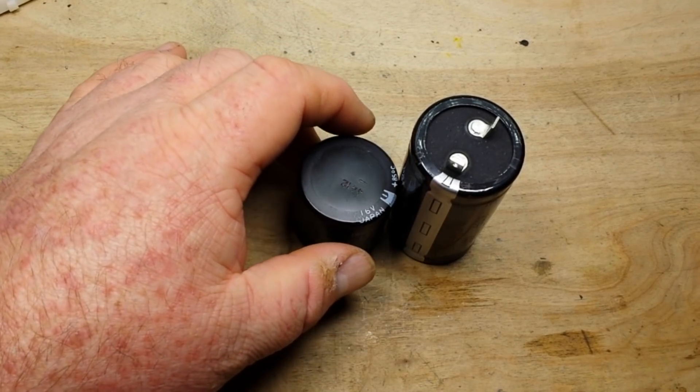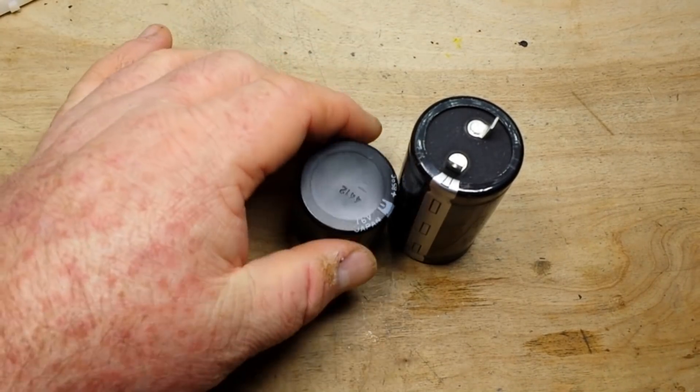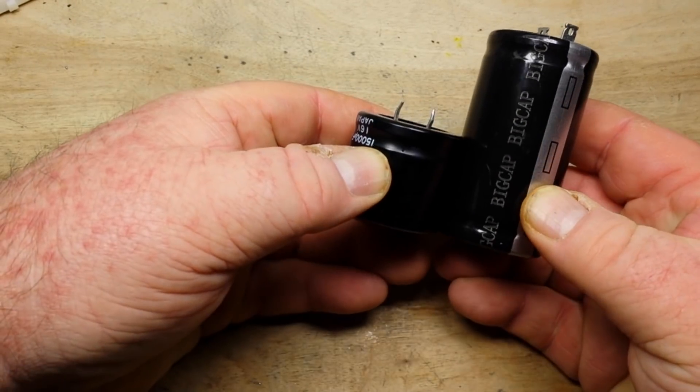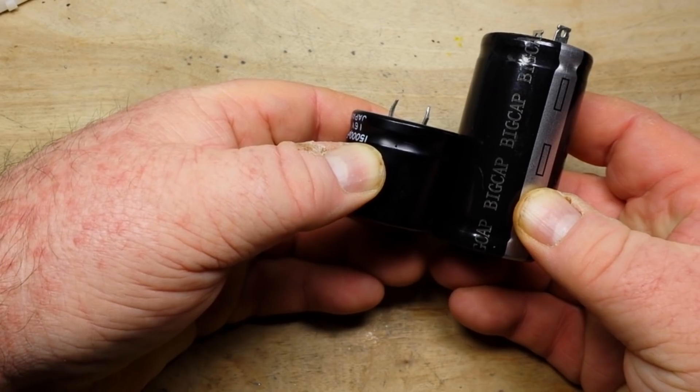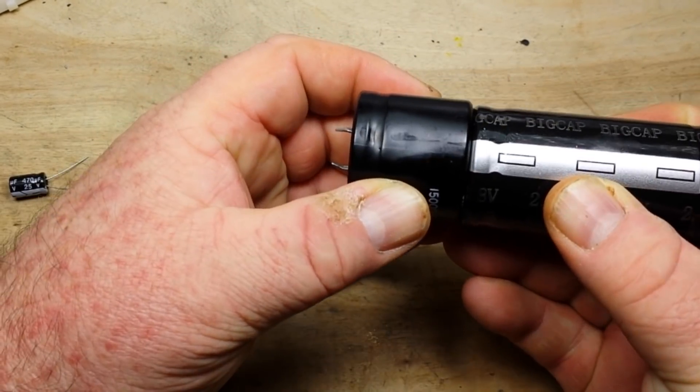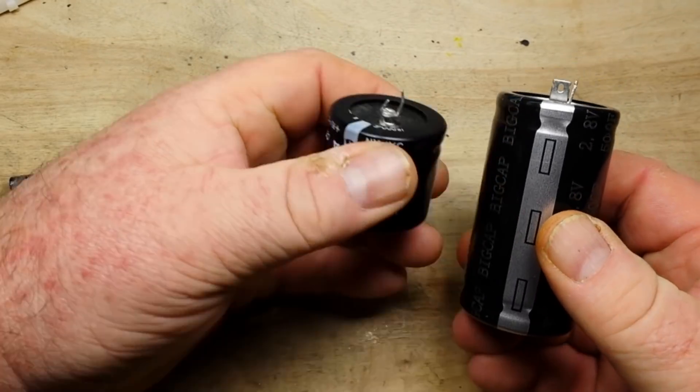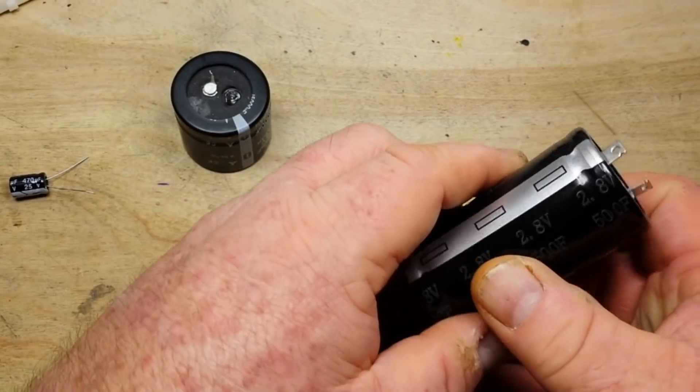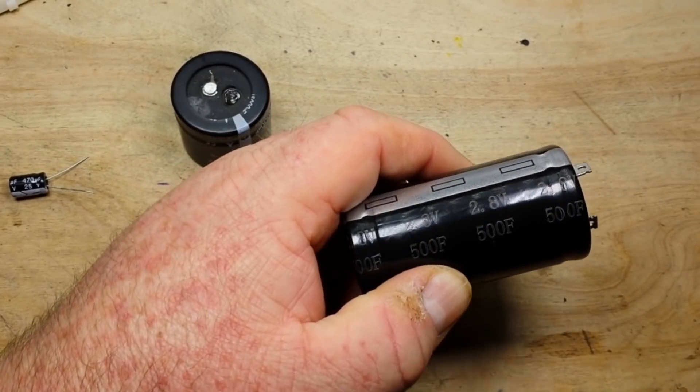I mean even if you just took this on size alone, so that's 15,000 microfarads, you doubled it so these are basically the same size diameter and length, you would still only be getting 30,000 microfarads out of this guy and still 500 farads out of this guy.